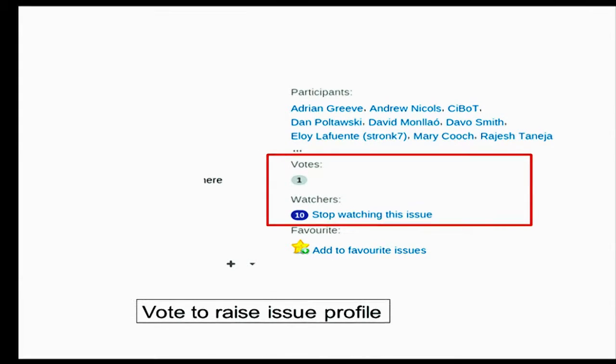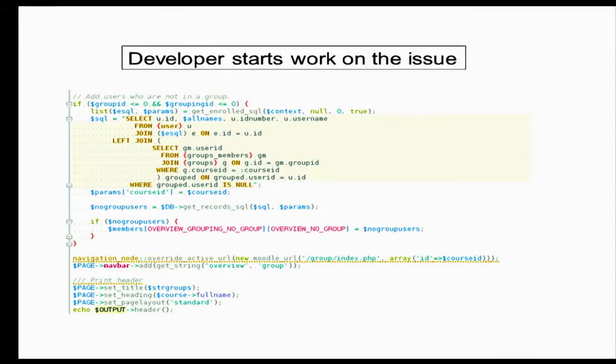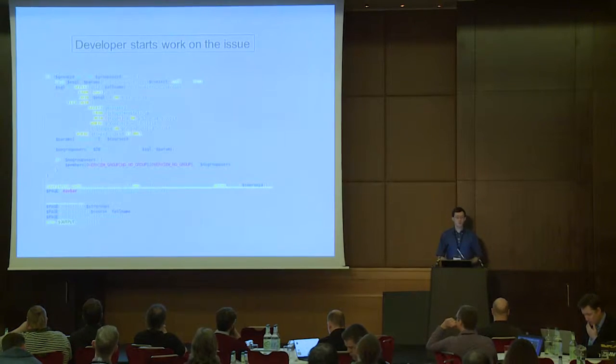They can also watch the issue so they can get notified and updated about it. And obviously, the more people who vote for an issue, the more likely it is that Moodle HQ are going to pick up that issue themselves and start doing some extra work on it. The next thing that's going to happen is that someone's got to write the code for it. It might be Moodle HQ, an independent developer, or you might contact one of the Moodle partners to do the development.